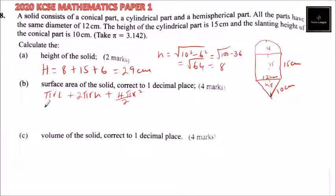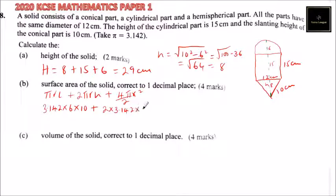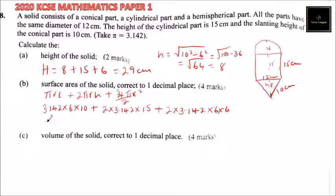So we calculate: 3.142 multiplied by 6 multiplied by 10 for the conical part — that is πrl. Then plus 2 multiplied by 3.142 multiplied by 6 multiplied by 15 for the cylindrical curved surface. Then plus 2 multiplied by 3.142 multiplied by 6 squared for the hemispherical part. You can use your calculator here.